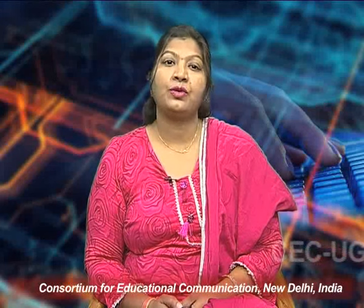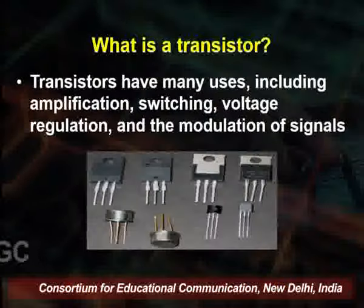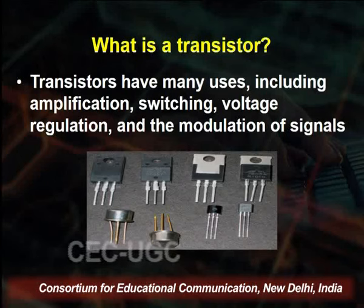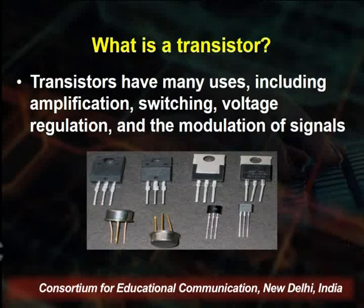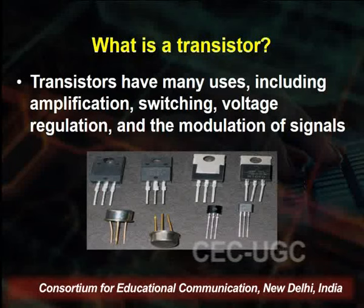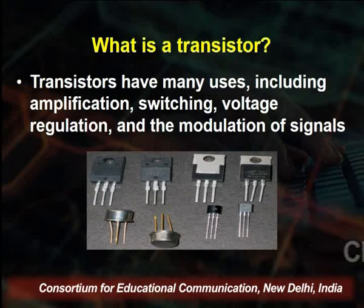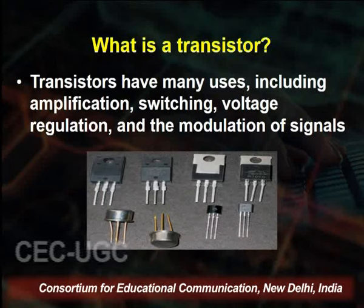The emitter generates electrons and the collector collects them. The input signal of small amplitude is applied at the base to get the magnified output signal at the collector. Basically, the transistor is a three-terminal device made of semiconductor material. We use the transistor to get the amplified signal.